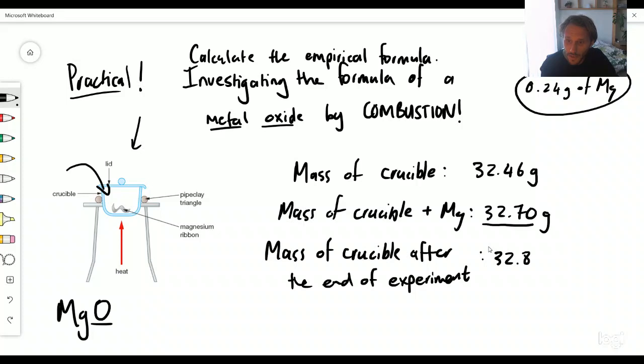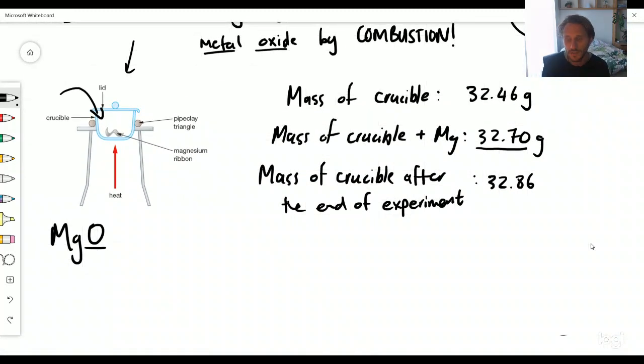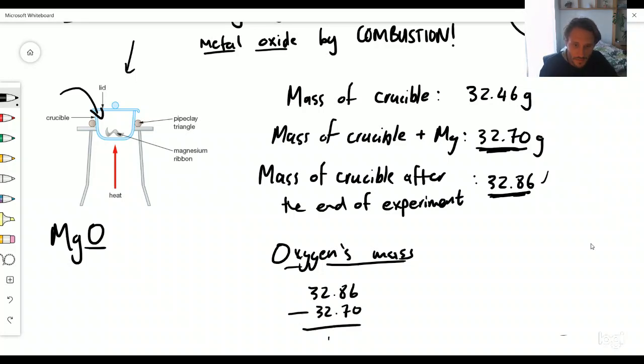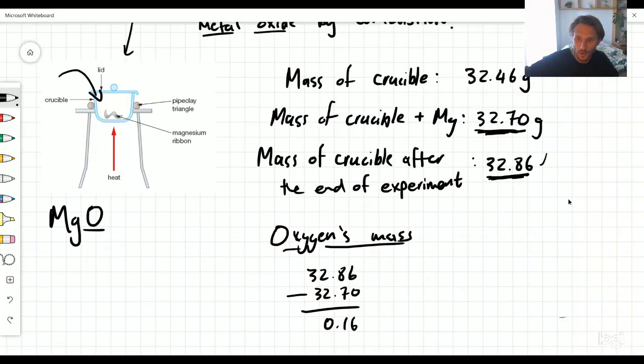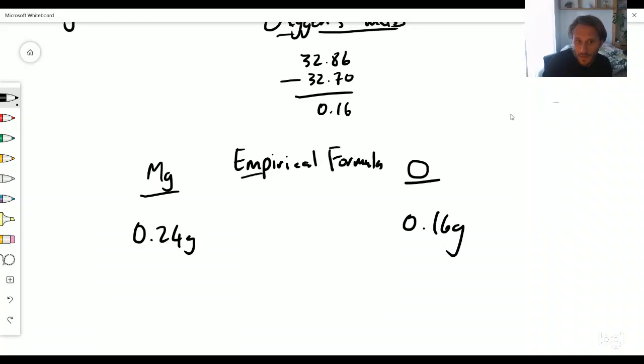So what I weighed it as is 32.86 grams. So if you think about this and you get a little bit clever here, we can actually work out how much oxygen did actually combine. Well, we can take this number and we can minus it from this number, because this is the weight of magnesium and this is after the reaction - we got a higher weight, so that must be the oxygen. So the oxygen's mass must be 32.86 minus 32.70, and what we get here is 0.16. So if we take both our values now that we've got - we've got magnesium, this weighs 0.24 grams from my initial calculation, and the oxygen weighs 0.16 grams.